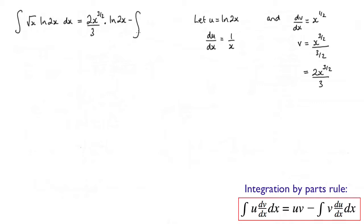minus the integral of v du dx. So this times 1 over x. So 2x to the 3 over 2 over 3 times 1 over x dx.